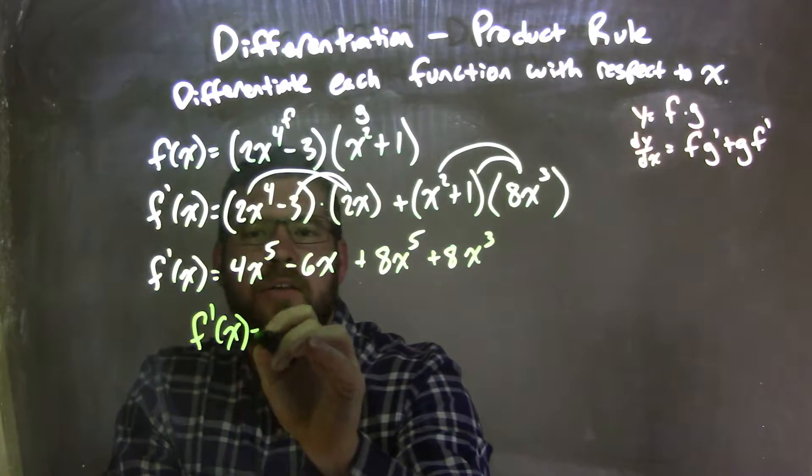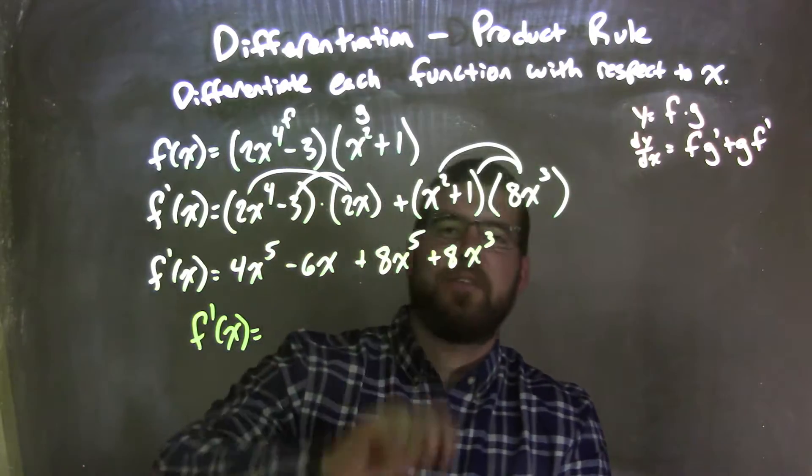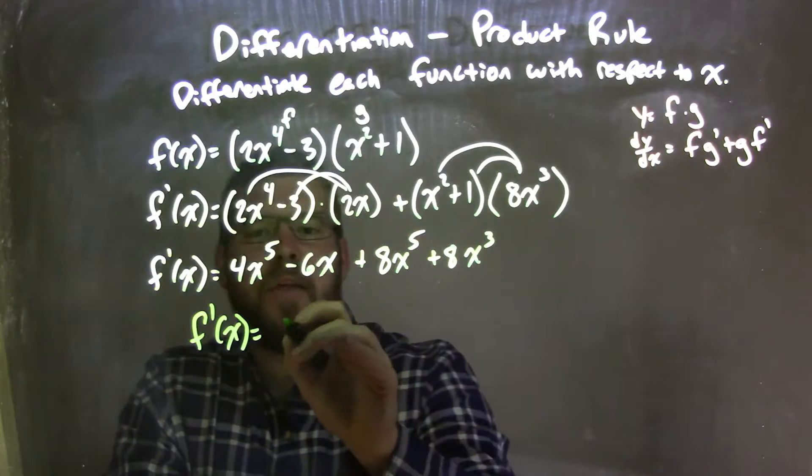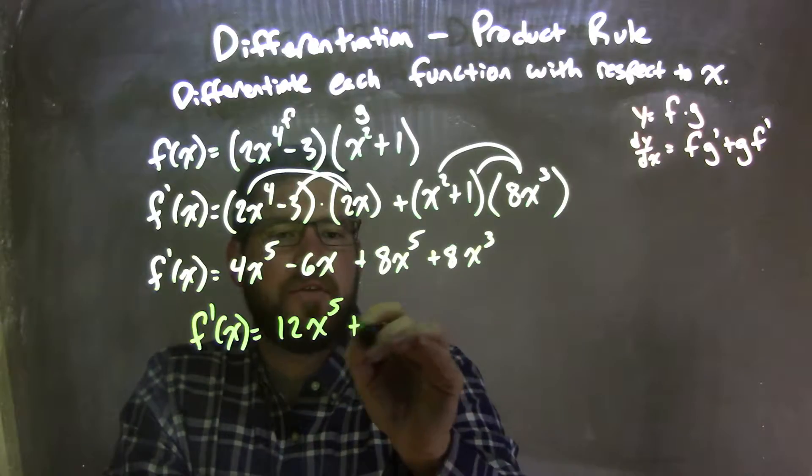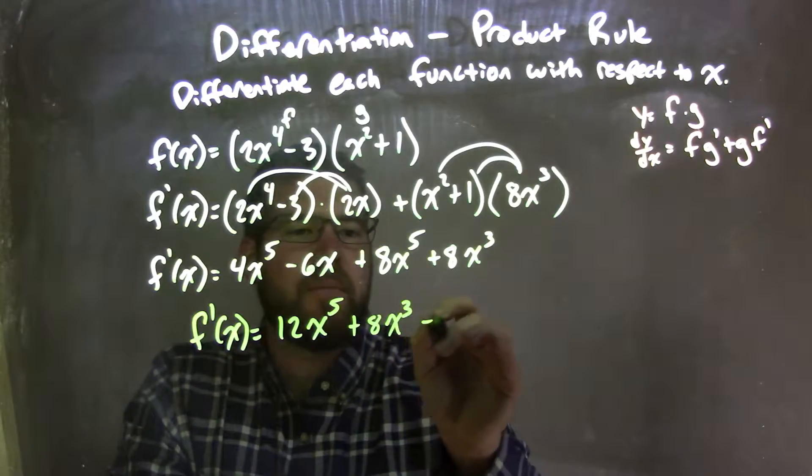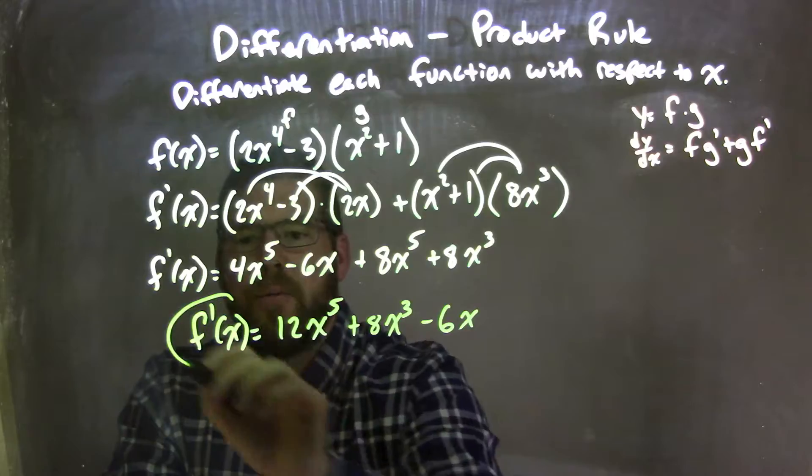So we have f prime of x is equal to, 4x to the 5th and 8x to the 5th are my highest degrees. We add them together. We have 12x to the 5th. The next highest degree was 8x to the 3rd, so we have plus 8x to the 3rd minus 6x, and there we have it.